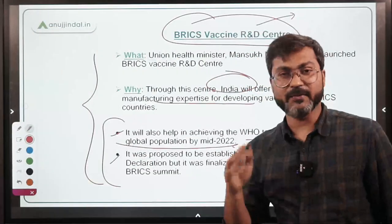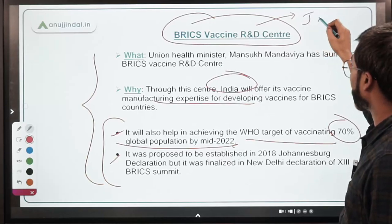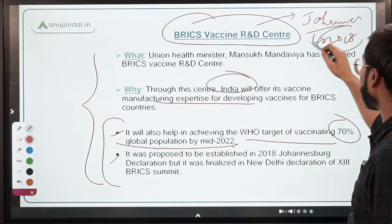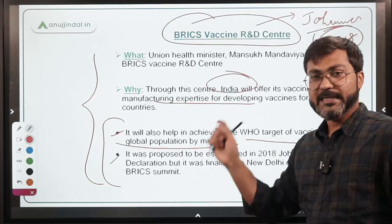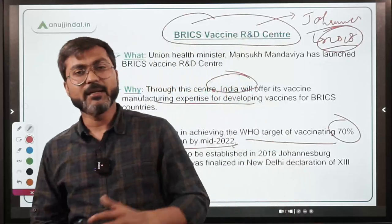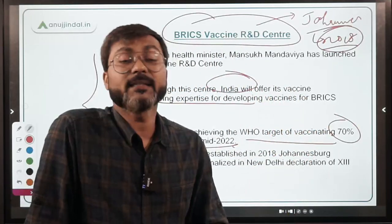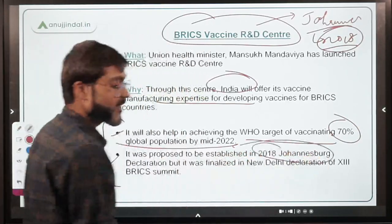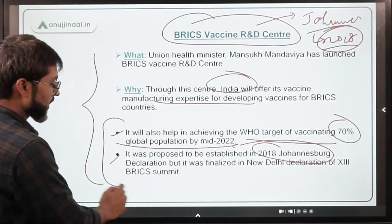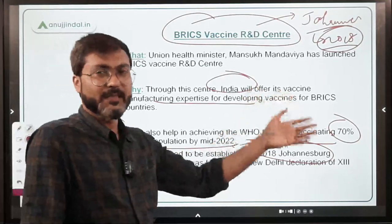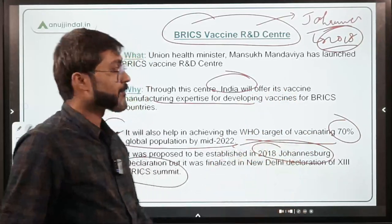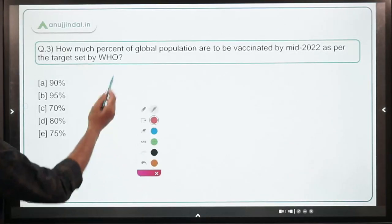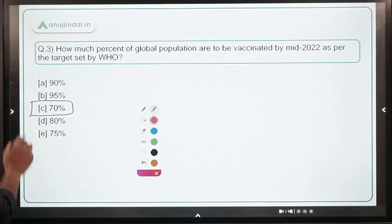The target is 70%. Also remember that the idea of creating this R&D center was first introduced in the Johannesburg Declaration in the year 2018, but finally all nations agreed to establish it in the New Delhi Declaration at the 13th BRICS Summit held recently. So the BRICS Vaccine R&D Center has been inaugurated by Mansukh Mandaviya, and the correct answer is option C — 70 percent.